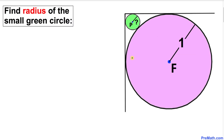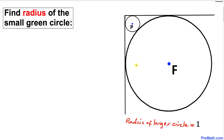Welcome to Pre-Math. In this video tutorial we have two circles that are tangent to each other, and also tangent to two tangent lines, as you can see in this figure. The radius of the bigger circle is one, and we are going to calculate the radius of the smaller green circle. Let's get started with the solution.